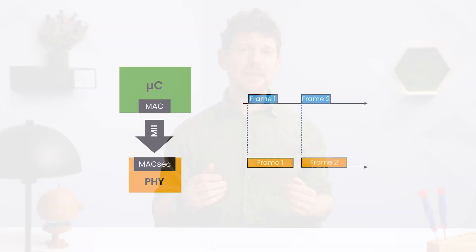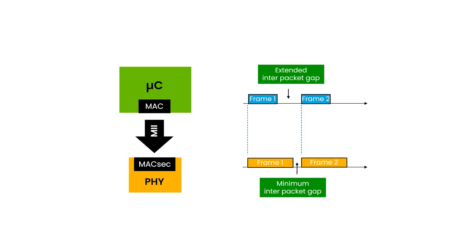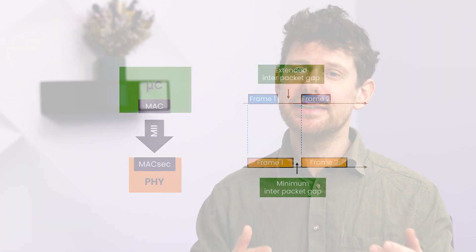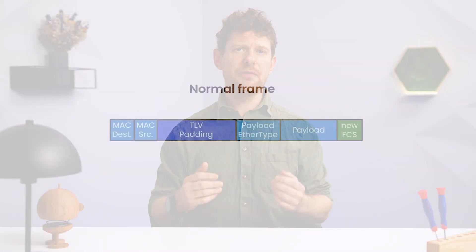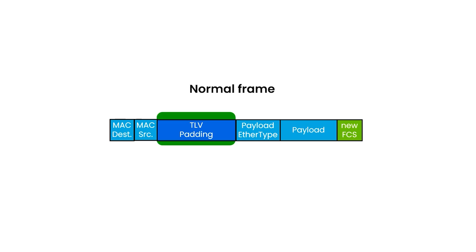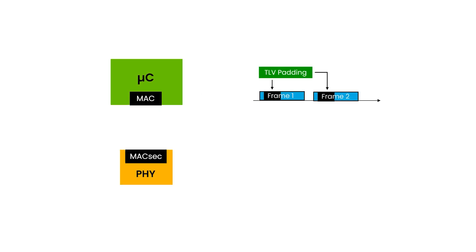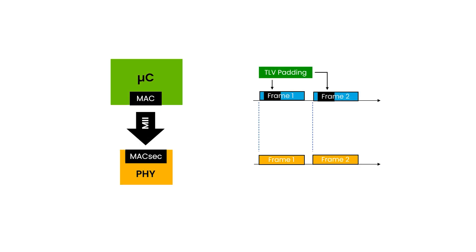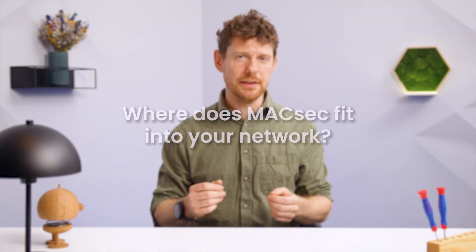In the extended inter-packet gap approach, the gap between two subsequent packets is increased by the MAC. This ensures that the succeeding packet is sent after the preceding packet has been transmitted. The TLV header approach uses an NXP proprietary TLV header, requiring a small modification of the network stack to insert the static TLV header into each frame. No state machines or complicated software logic is required.